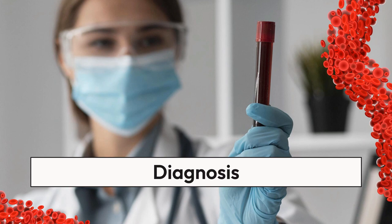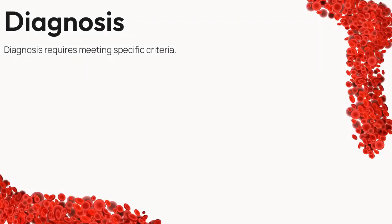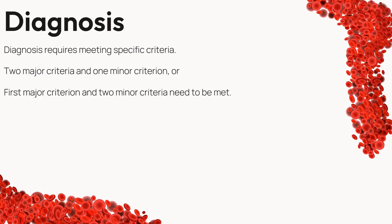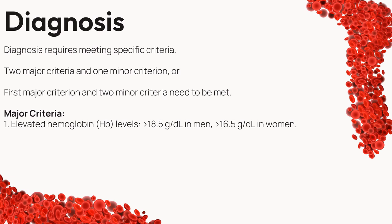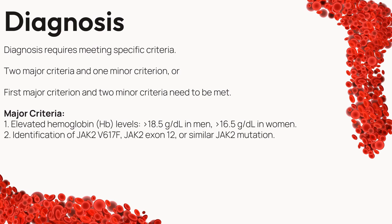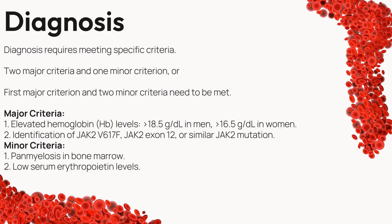Next, we explore the diagnostic journey into polycythemia vera, guided by the rigorous standards set by the World Health Organization. Diagnosis of PV requires meeting specific criteria: either two major criteria and one minor criterion, or the first major criterion and two minor criteria. The first major criterion involves elevated hemoglobin levels — greater than 18.5 g/dL in men and 16.5 g/dL in women. The second major criterion revolves around identification of a JAK2 mutation, such as JAK2V617F or JAK2 exon-12. Minor criteria include panmyelosis in the bone marrow, low serum erythropoietin levels, and autonomous in vitro erythroid colony formation.